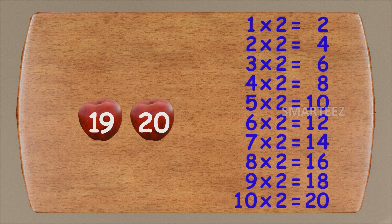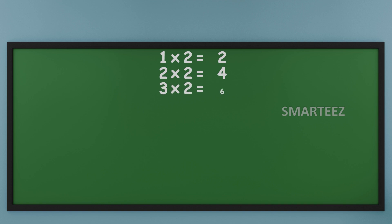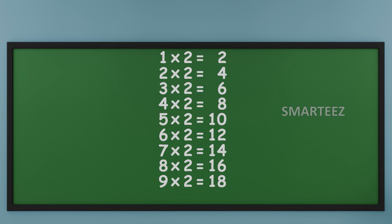Let's do the tables now. Take a look. One times two is two. Two times two is four. Three times two is six. Four times two is eight. Five times two is ten. Six times two is twelve. Seven times two is fourteen. Eight times two is sixteen. Nine times two is eighteen. And ten times two is twenty.